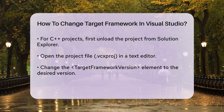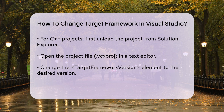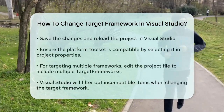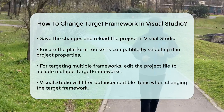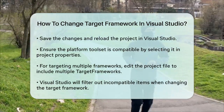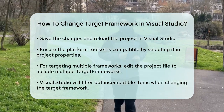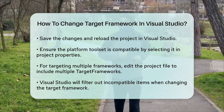In some cases, you might want to target multiple frameworks in a single project. For .NET projects using .NET 5 and later, you can do this by editing the project file to include multiple target frameworks. For example, you can set <TargetFrameworks>net7.0;net8.0</TargetFrameworks> to target both .NET 7.0 and .NET 8.0.